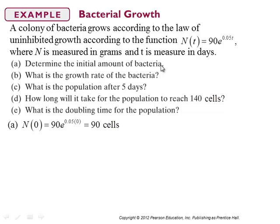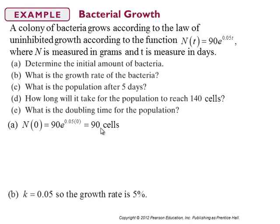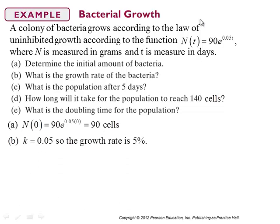The initial amount of bacteria is determined by the coefficient 90. When t = 0, you have 90 times e^(0.05 × 0) = 90 × e^0 = 90 × 1 = 90 cells. That's the initial population. Part B: the growth rate is given by the multiplier of t in the exponent, which is 0.05 as a decimal, or 5%.